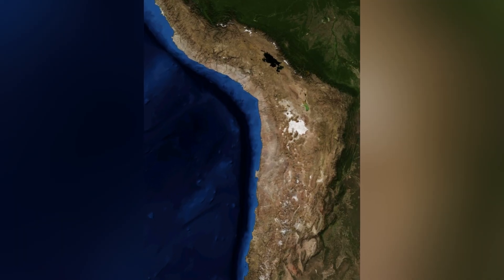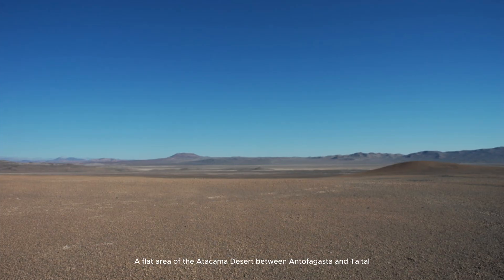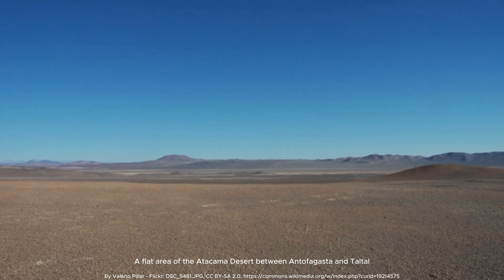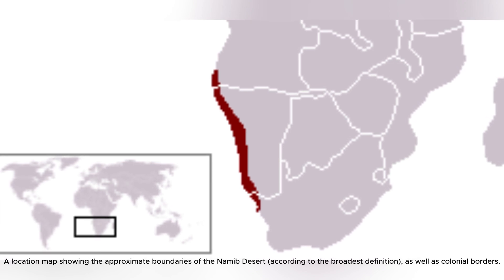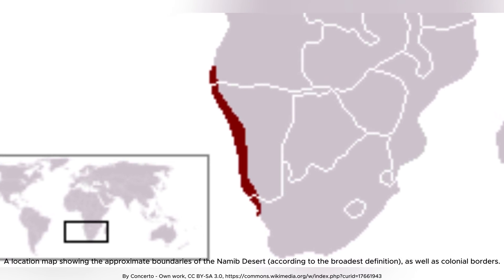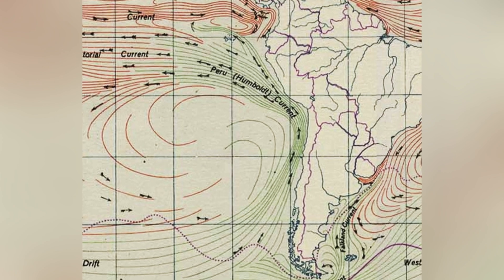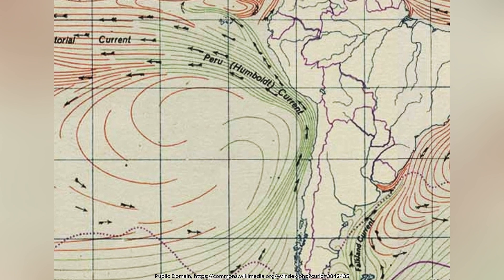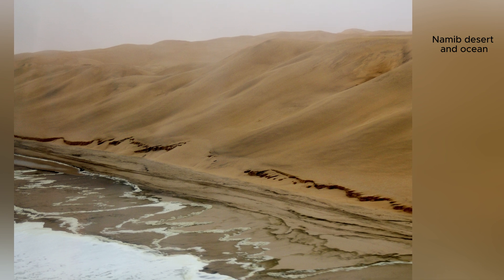Coastal deserts offer another unique scenario. Deserts like the Atacama in South America and the Namib in southwestern Africa are situated along cool ocean currents. These currents cool the air above them, preventing it from rising and causing condensation.